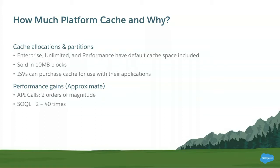For example, if your customer installs your application on their org, only your application can access that cache, and the customer's in-house code will not be able to touch it. You might be wondering why you'd need Platform Cache — there are a lot of performance gains to be achieved. Based on a sample app, API calls can be two orders of magnitude greater, and SOQL can be anywhere between 2 to 40 times the original performance, depending on whether you're making multi-transactional queries.